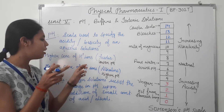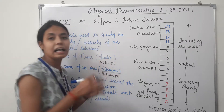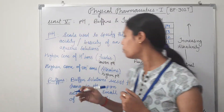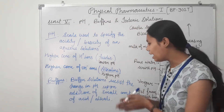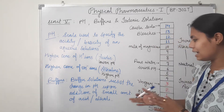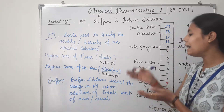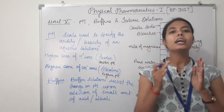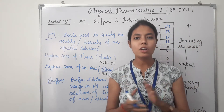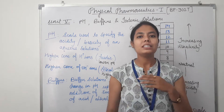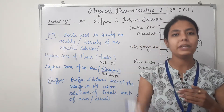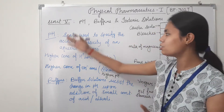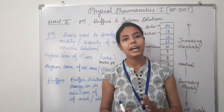The pH scale notes the reading in the alkaline region. This is the definition of pH in chemistry. If we talk about buffers, buffers are solutions which resist the change in pH upon addition of small amounts of acid or alkaline substances. Buffers are compounds or mixtures of compounds that, by their presence in solution, resist the change in pH upon addition of small quantities of acid or alkaline substances.